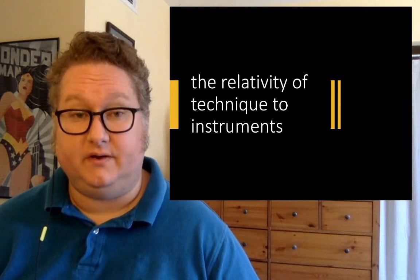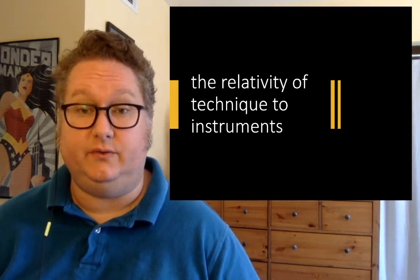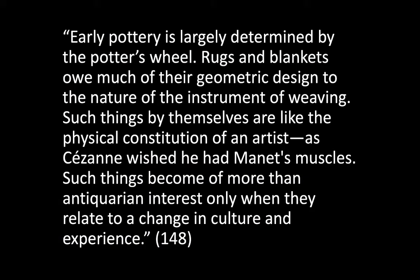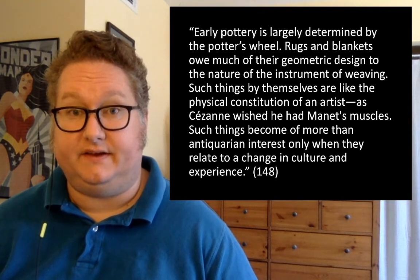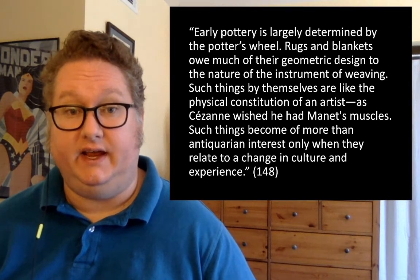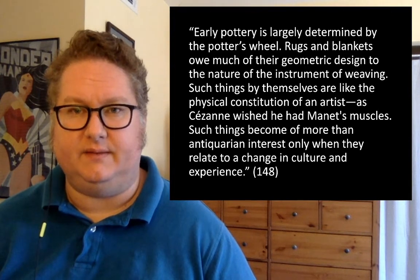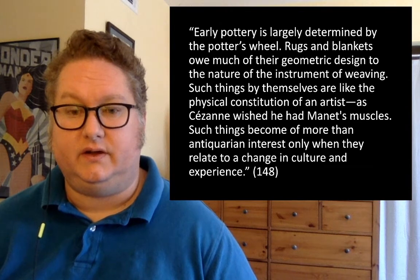Another major thesis in this chapter, again related to technique, is what Dewey calls the relativity of technique to instruments. Quoting Dewey: early pottery is largely determined by the potter's wheel, the instrument the potter uses. Rugs and blankets owe much of their geometric design to the nature of the instrument of weaving. Such things are like the physical constitution of an artist, as Cézanne wished he had Manet's muscles. Such things become of more than antiquarian interest only when they relate to a change in culture and experience. Technique is obviously relative to instruments, but the relativity of technique to form is more significant, and instrumental change is significant primarily because it permits response to new cultural needs and experiences.